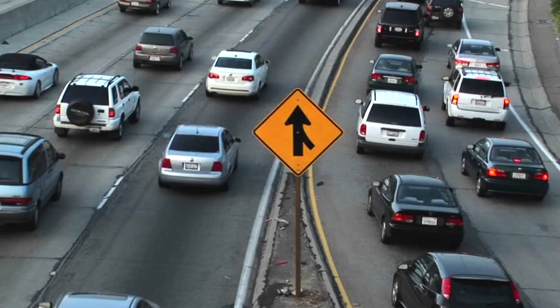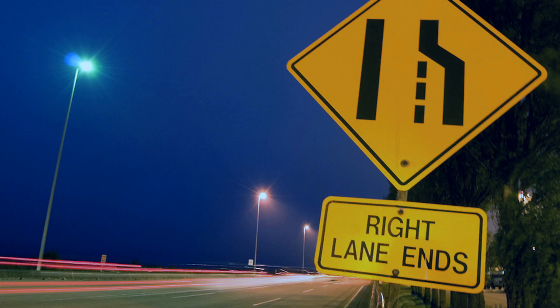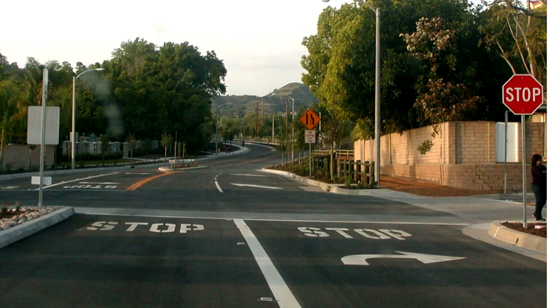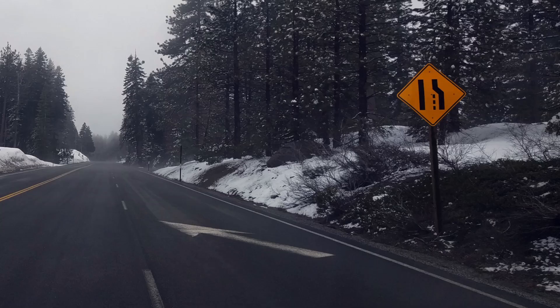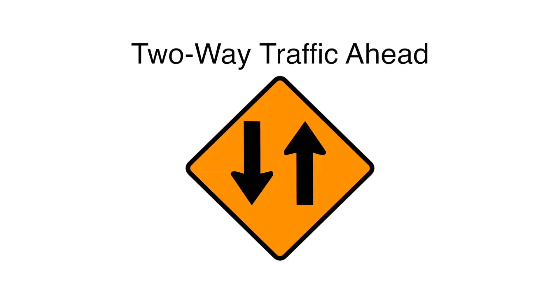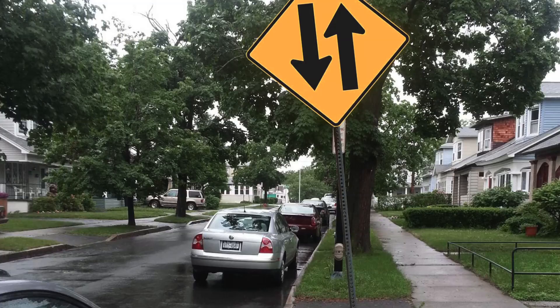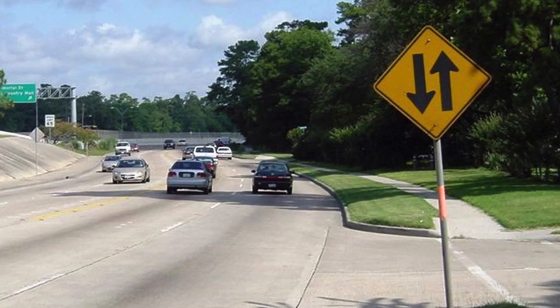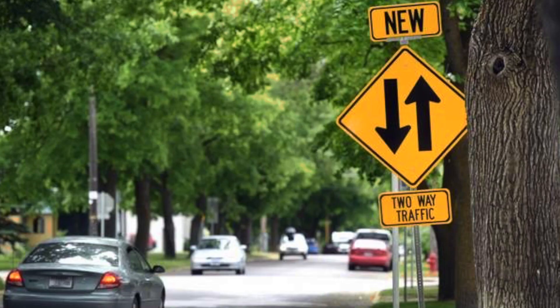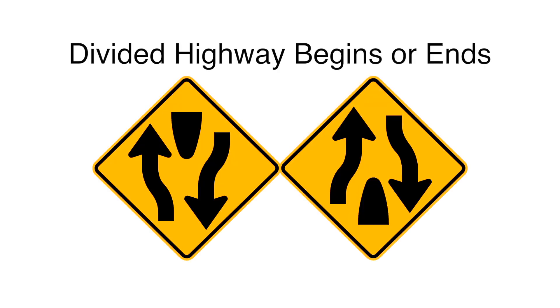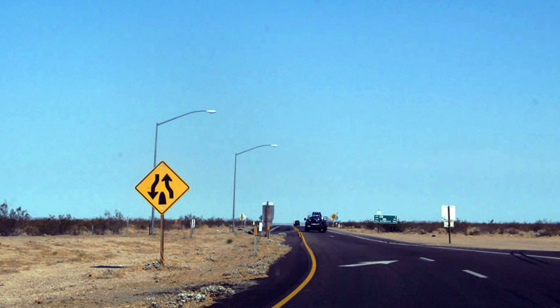Merging Traffic: Traffic is merging from the side shown. Lane Reduction: This sign indicates that the lane will end soon; vehicles in that lane must merge into the adjoining traffic lane. Two-way traffic ahead: The one-way road you are on joins a two-way road ahead — you will be facing oncoming traffic. Divided highway begins or ends: These signs indicate the beginning or end of a divided highway — keep to the right.